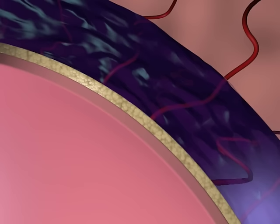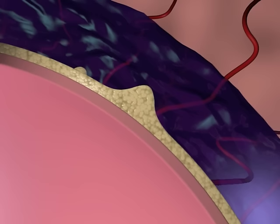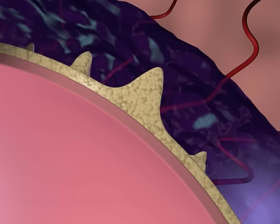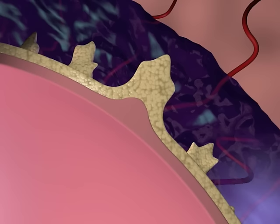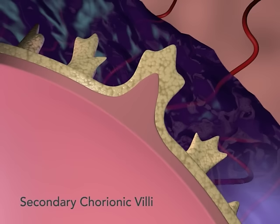Toward the end of the second week, small projections of the cytotrophoblast begin to expand into the syncytiotrophoblast, forming primary chorionic villi. Early in the third week, extra embryonic mesoderm grows into these villi, forming a core of loose connective tissue, at which point the structures are known as secondary chorionic villi.